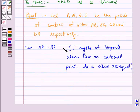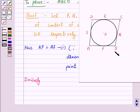Let us give this as number 1. Similarly, we have lengths of two tangents drawn from an external point B to a circle are equal. That is, BP is equal to BQ.